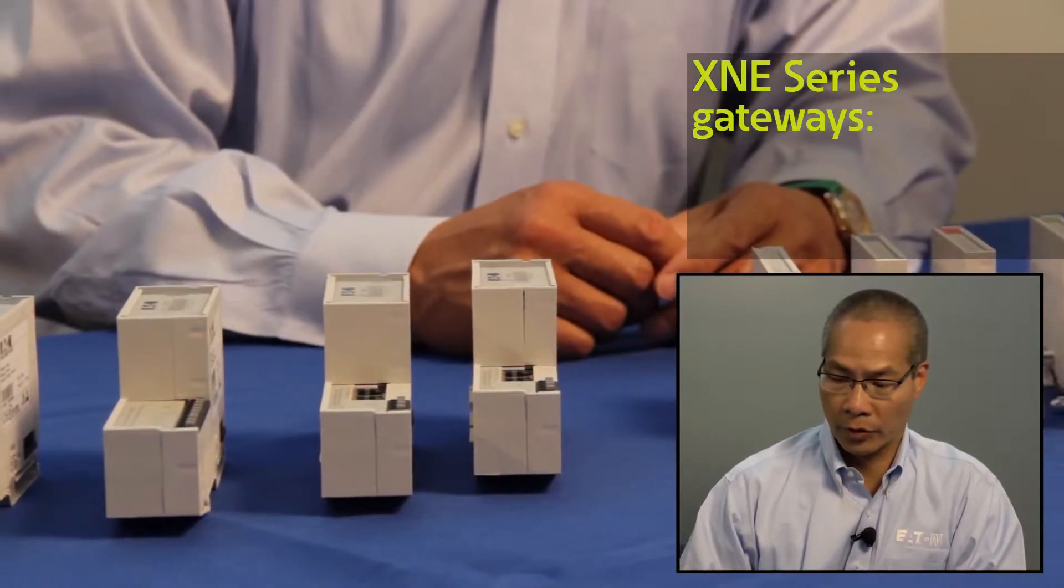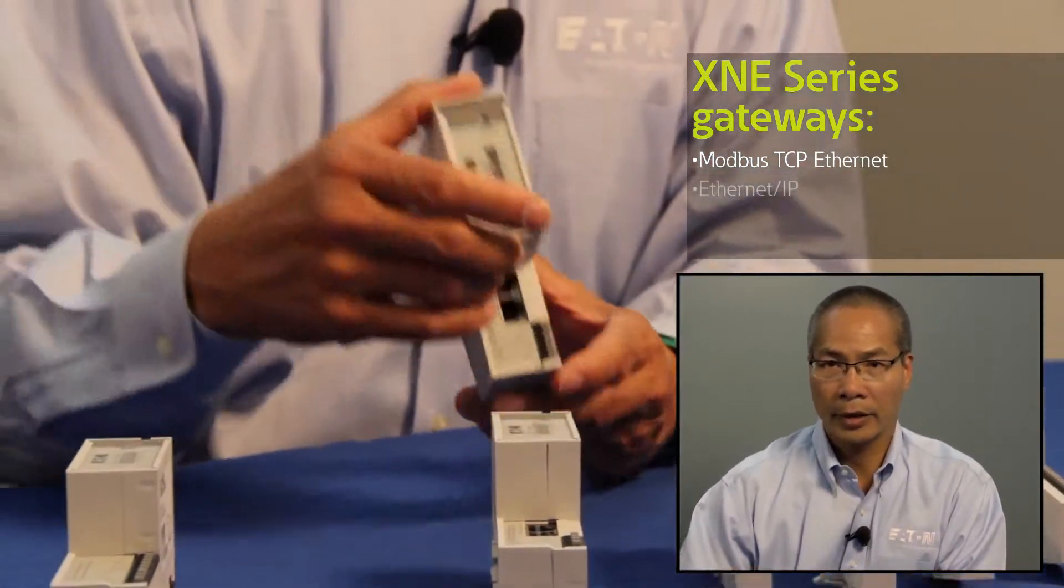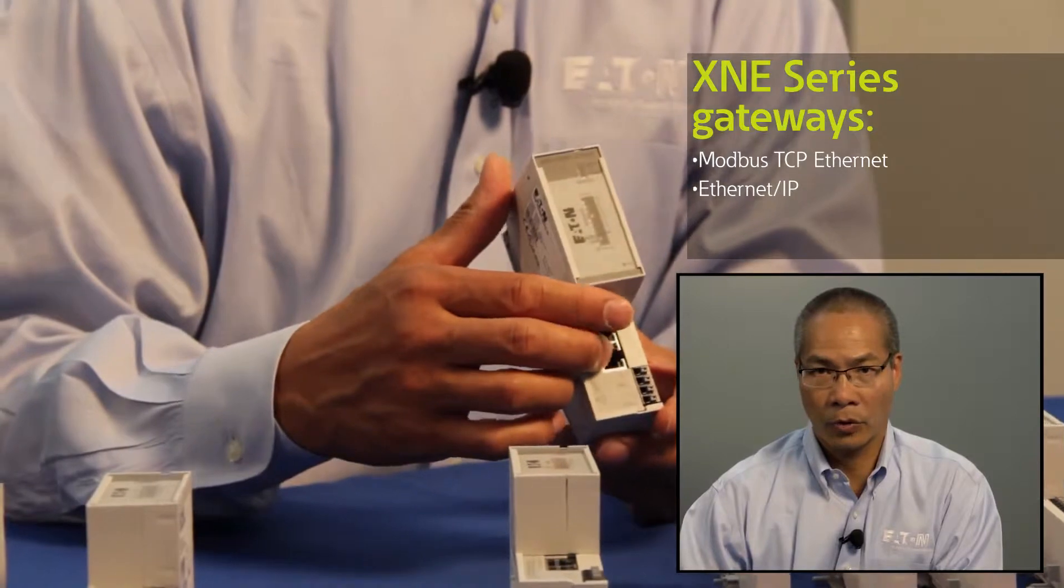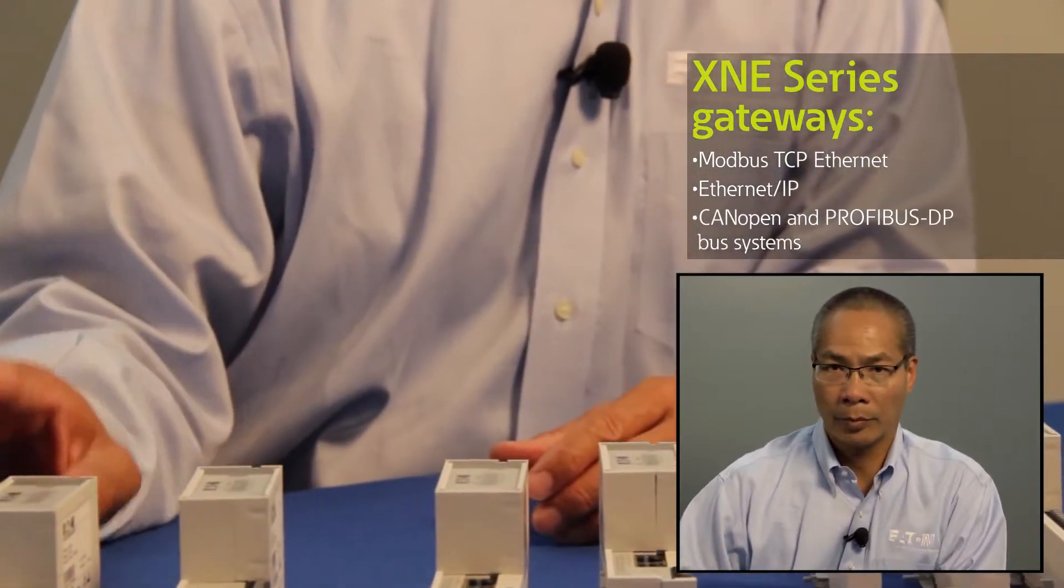The XNE is a high density remote I.O. system and comes with several gateways to connect to different networks. We have four different gateways so that you can connect on a Modbus TCP network, an Ethernet IP network for ODVA, CANOPEN, and Profibus DP.